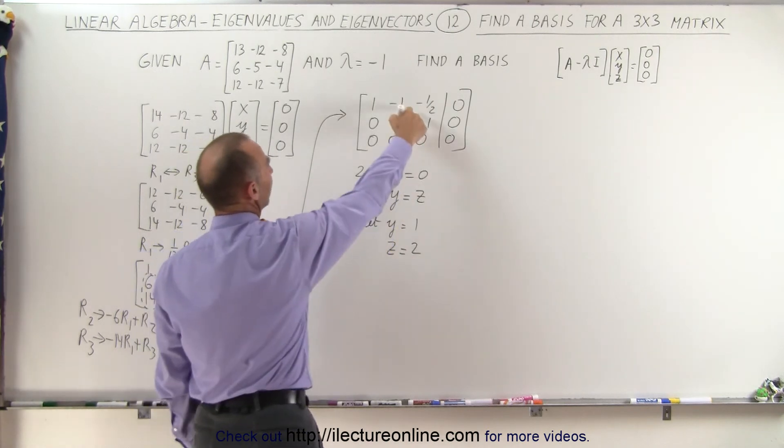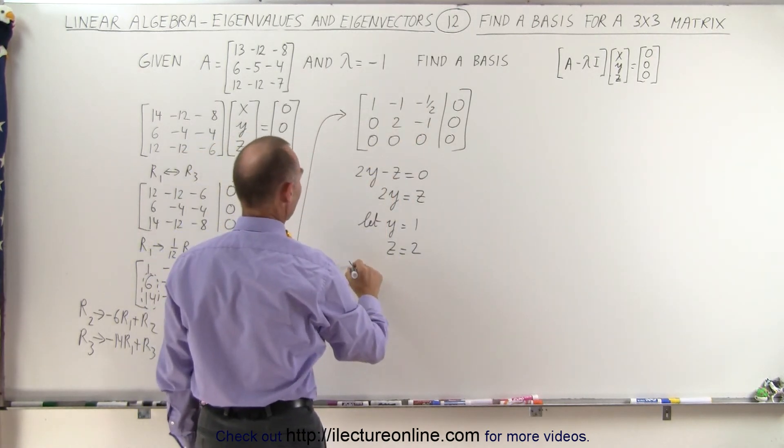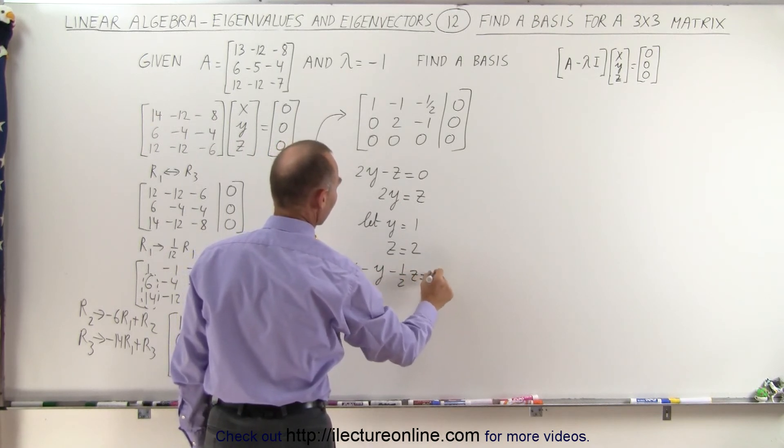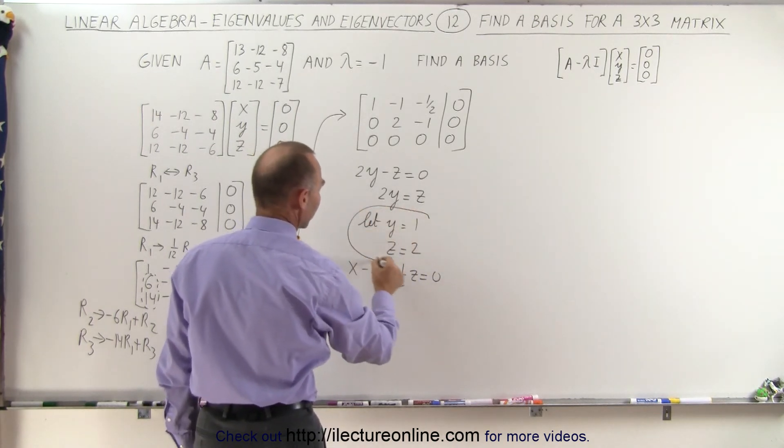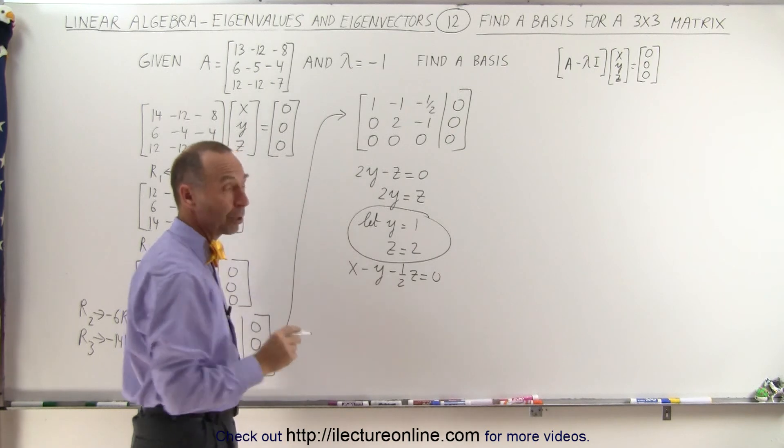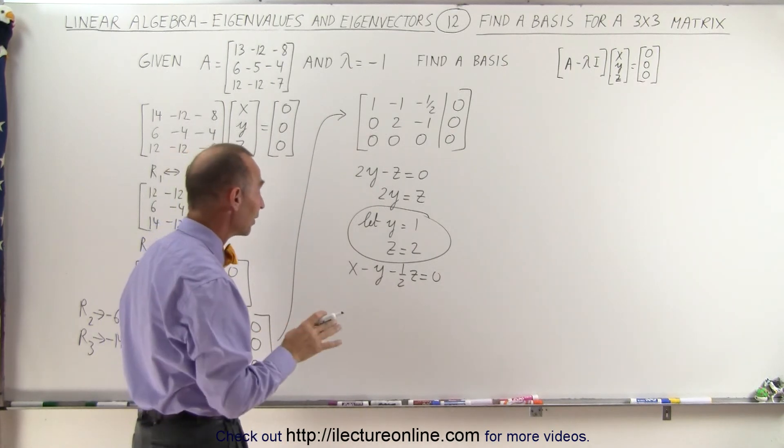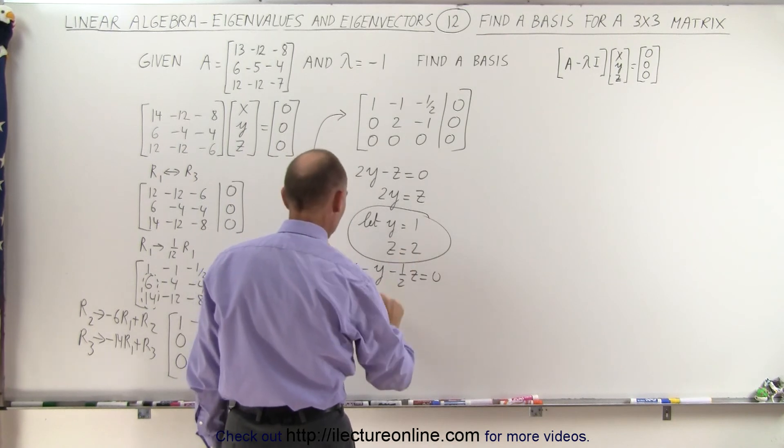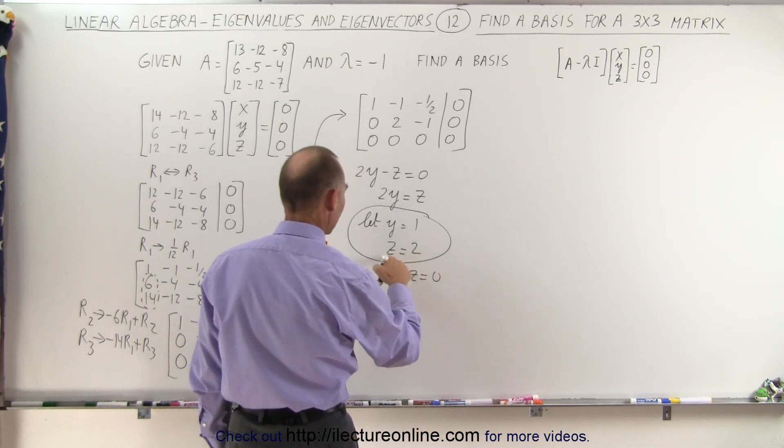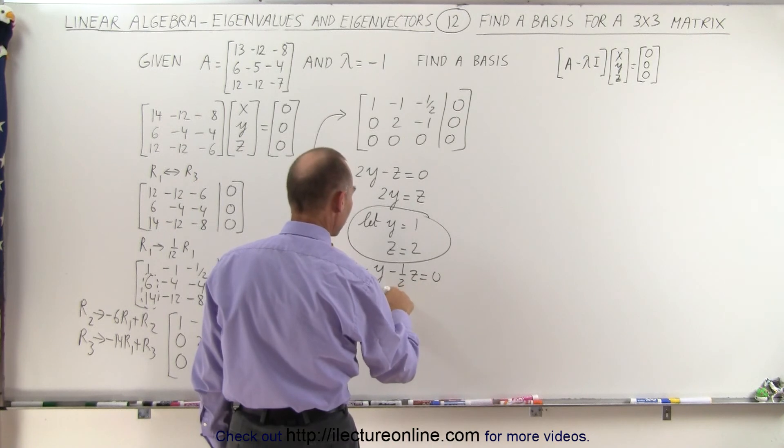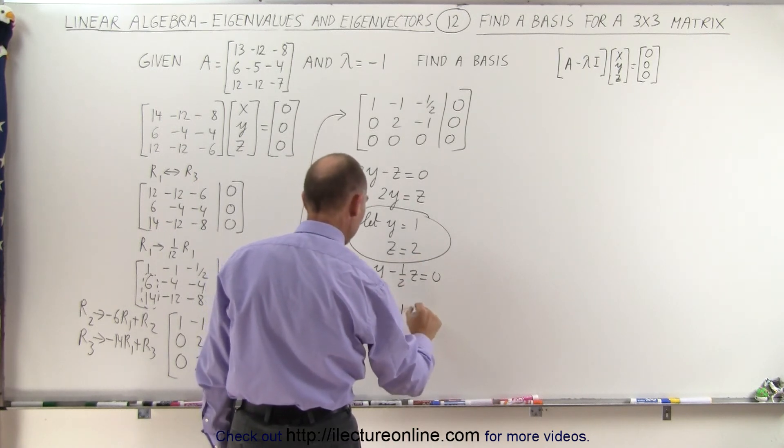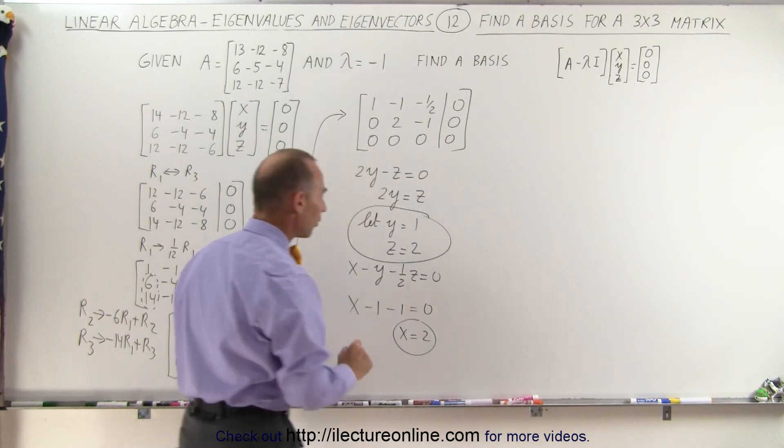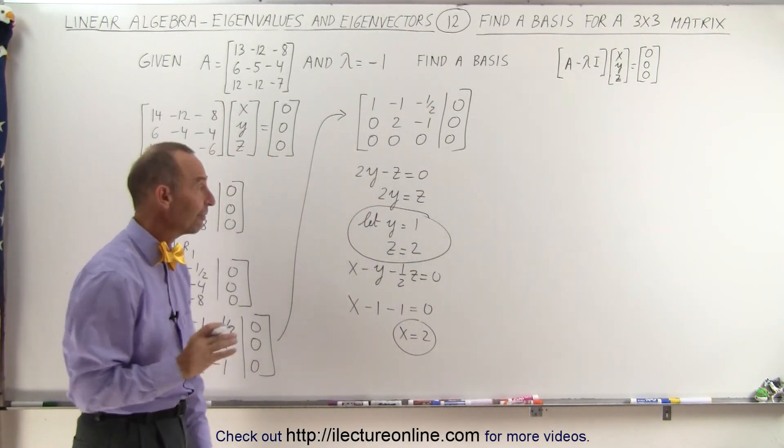Now bringing that into our second equation up here, we can write that x minus y minus half z is equal to 0, but I've already got values for y and z. When we plug those in, we find the associated value for x. We say that x minus y, y is 1, that's minus 1, and z is 2, minus 1 half z is minus 1 half times 2, or minus 1 equals 0, or x equals 2. So there are the three values belonging to the eigenvector.